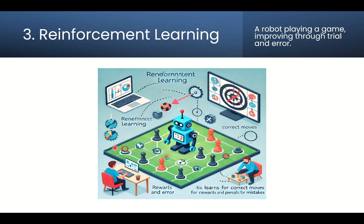The third type is reinforcement learning. In reinforcement learning, the model learns by interacting with the environment and getting rewards for good actions and penalties for bad actions, continuously improving based on feedback. Here you can see a robot playing a game — it improves its performance through trial and error. At the initial level its performance is not very high, but once it learns from the environment and from errors, performance improves. Self-driving cars also use reinforcement learning to learn from the environment.